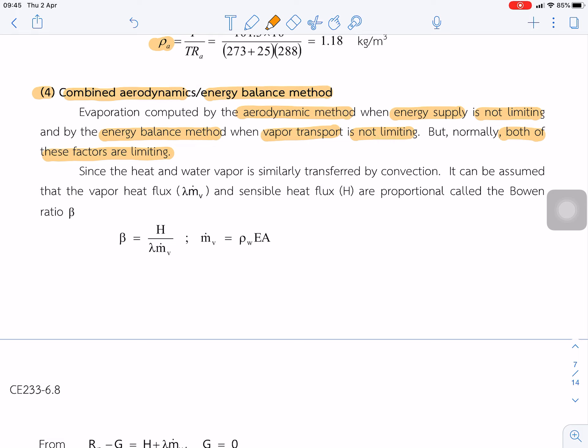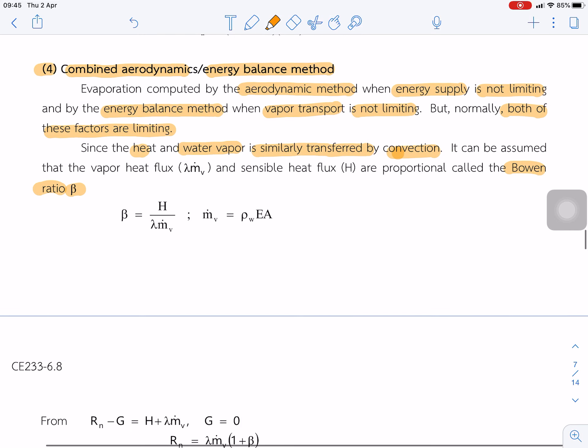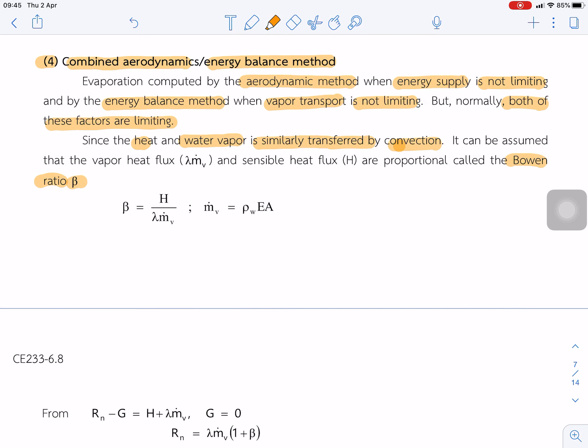We have to introduce one more parameter. We call the Bowen ratio beta. We found that the heat and the water vapor pressure is similarly transferred by convection. So we can assume that one parameter is the ratio between the heat and water vapor.